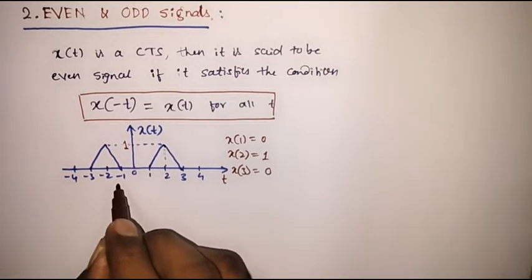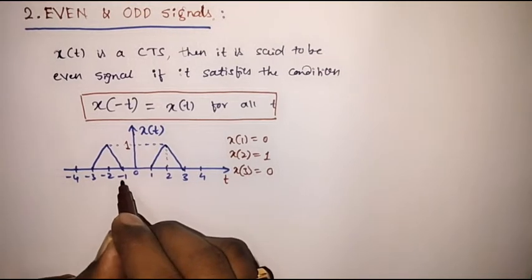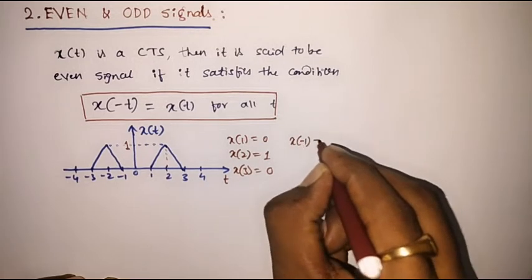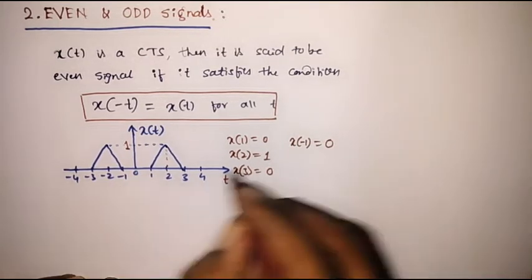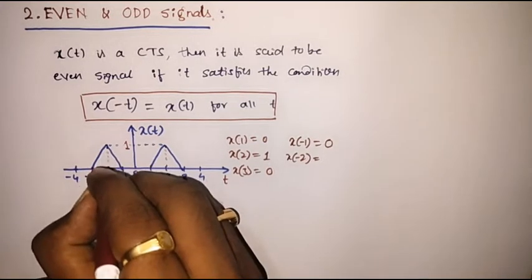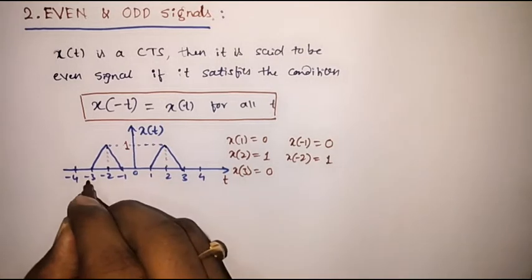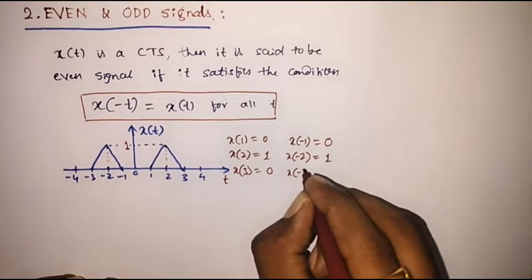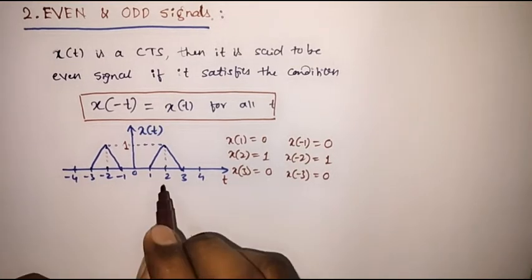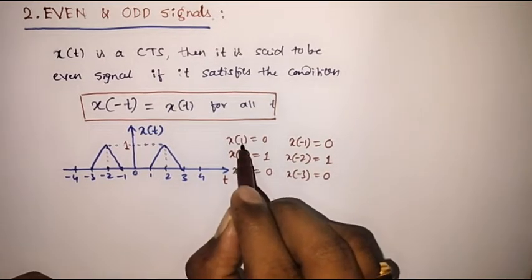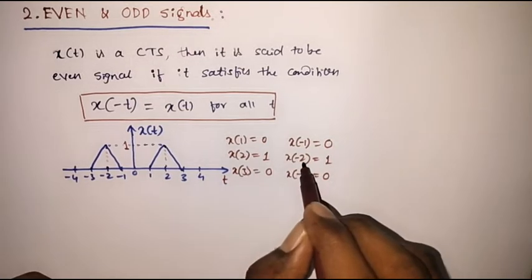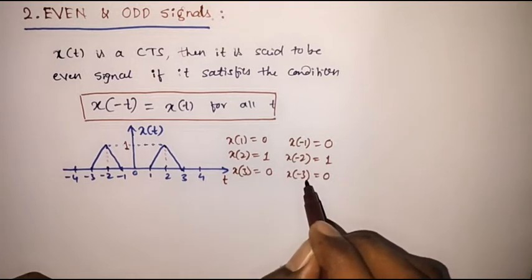Similarly, at t equal to minus 1, the value of x of minus 1 is equal to 0. At t equal to minus 2, x of minus 2 is equal to magnitude 1. And at t equal to minus 3, x of minus 3 is equal to 0. Now we can observe that x of 1 is equal to x of minus 1, x of 2 is equal to x of minus 2, and x of 3 is equal to x of minus 3.